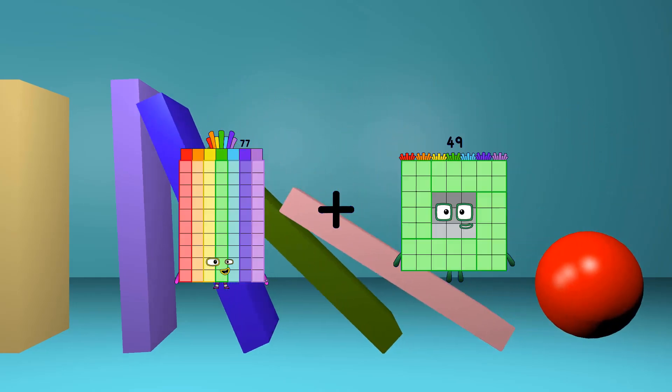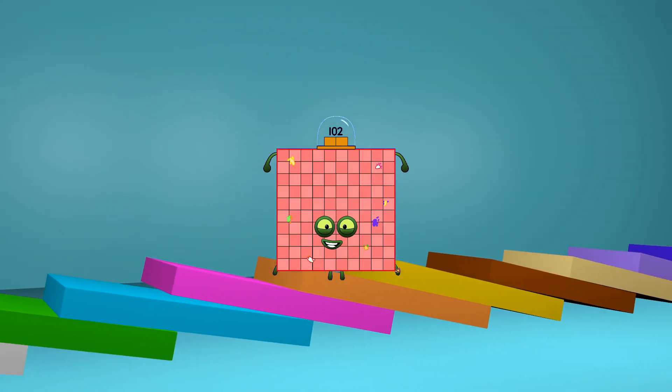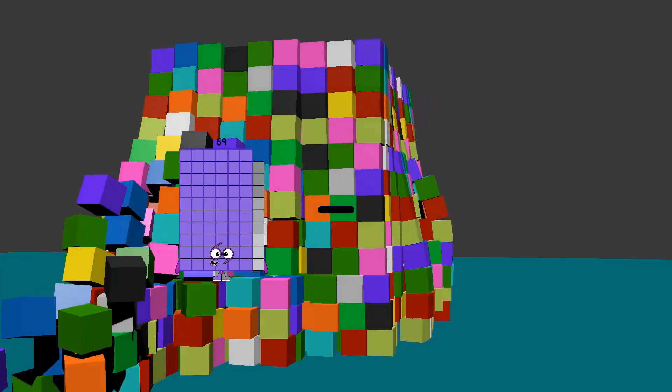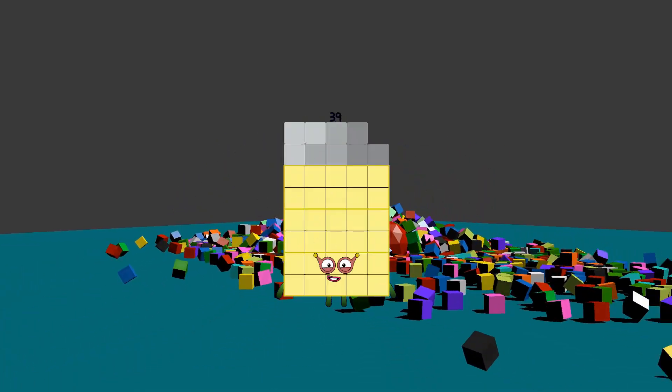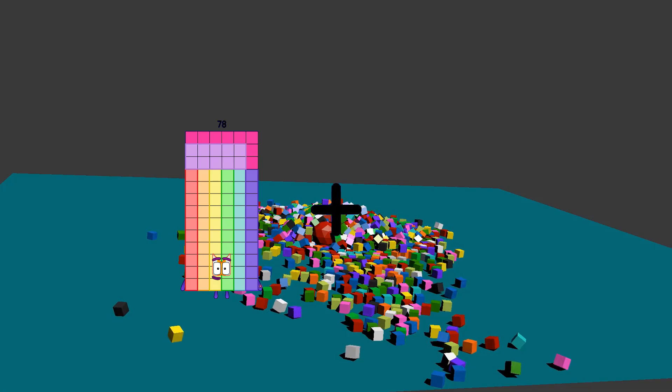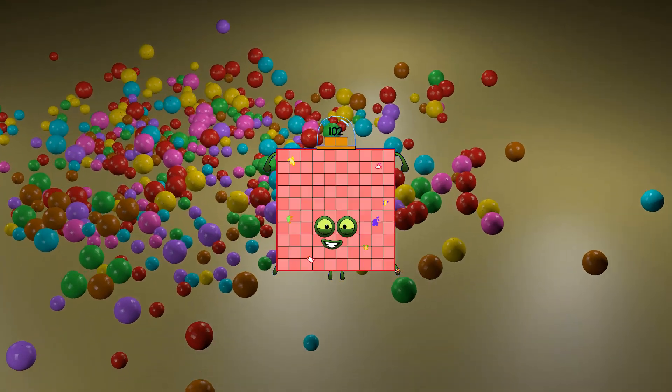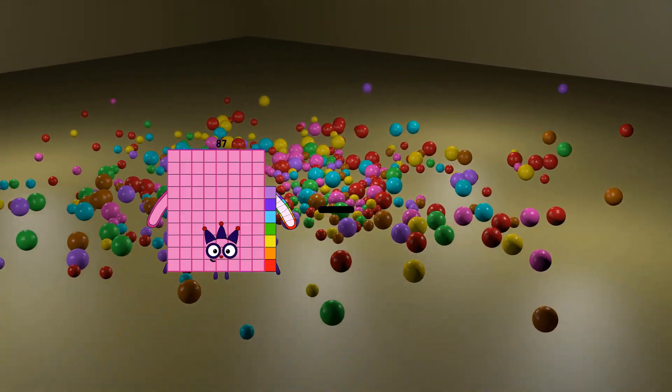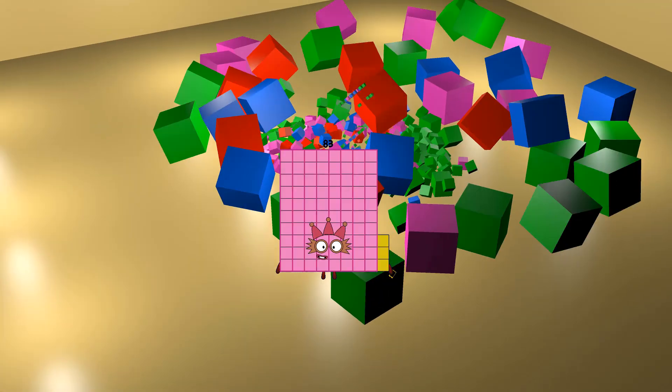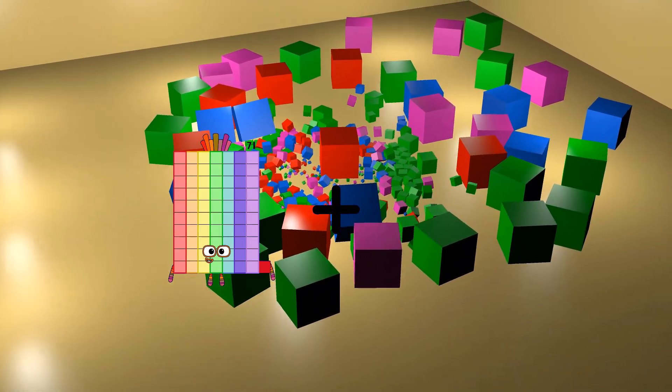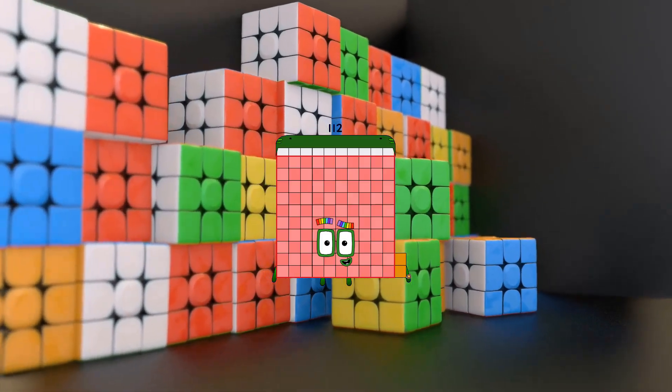77 plus 25 equals 102. 69 minus 30 equals 39. 78 plus 24 equals 102. 87 minus 4 equals 83. 71 plus 41 equals 112.